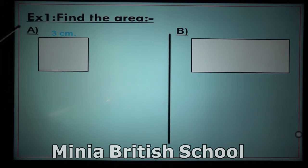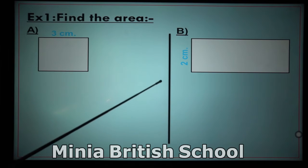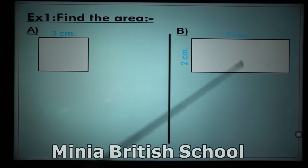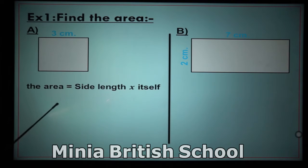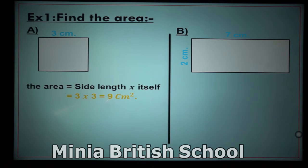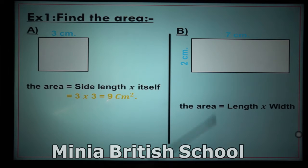Exercise number one: find the area. For part (a), I have a square with side length equal to 3 centimeters. For part (b), I have a rectangle with width equal to 2 centimeters and length equal to 7 centimeters. To find the area of the square, write the rule: area equals side length times itself. Side length equals 3, so 3 times 3 equals 9 square centimeters. For the rectangle, area equals length times width: 7 times 2 equals 14 square centimeters.